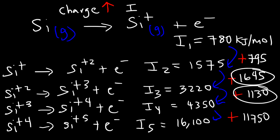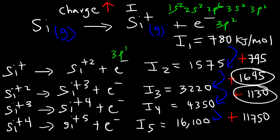The electron configuration of silicon is 1s² 2s² 2p⁶ 3s² 3p². Removing the first electron is removing the 3p² electron; the second is 3p¹; the third is 3s²; and the fourth is 3s¹. The jump from the second to the third ionization energy is greater because we're removing a 3s electron as opposed to a 3p electron. The 3p electron is further away from the nucleus, and the 3s electrons provide more shielding for the 3p electron.